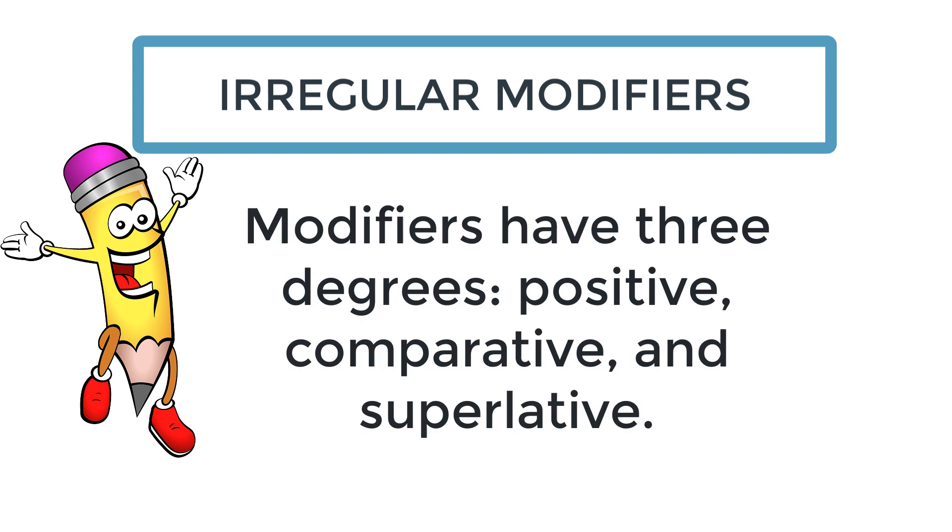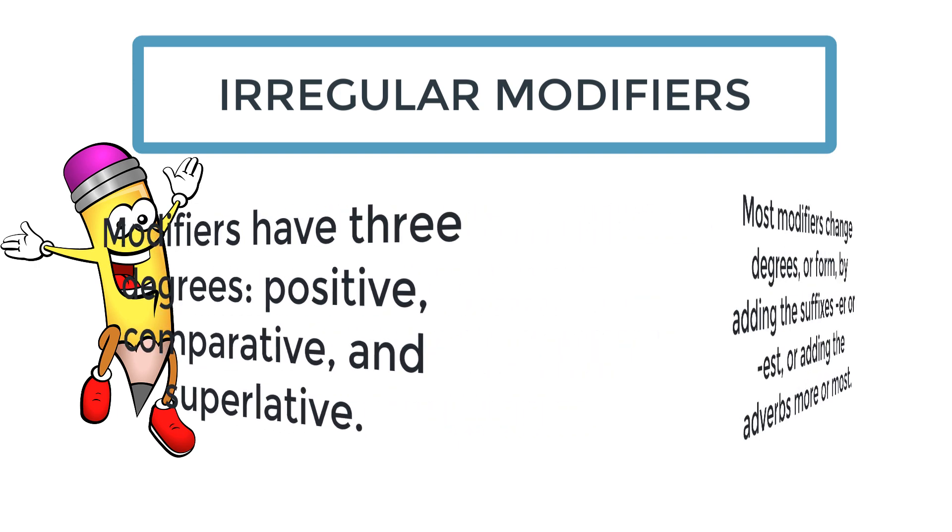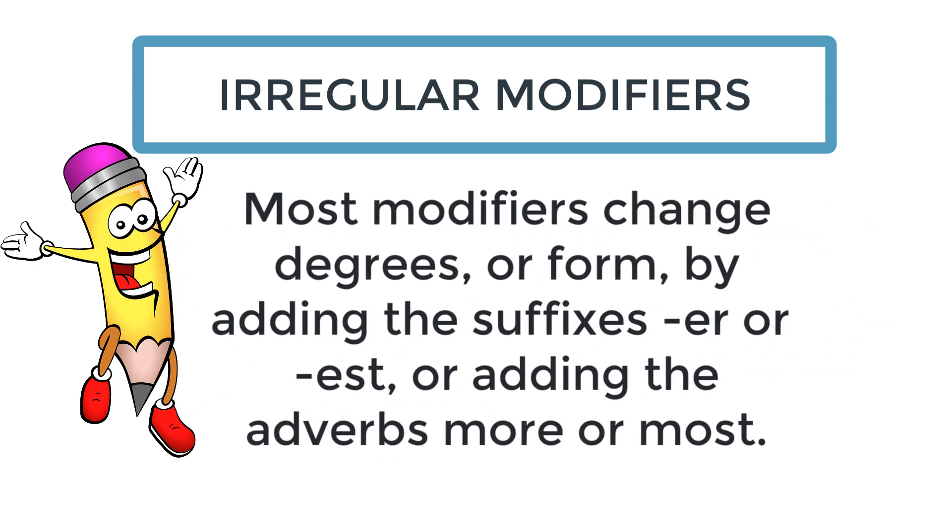In a previous video, we learned about degrees of modifiers from the positive, the comparative, and the superlative. And we learned that most modifiers change degrees or form by adding er or est, or sometimes just adding the adverb more or most.